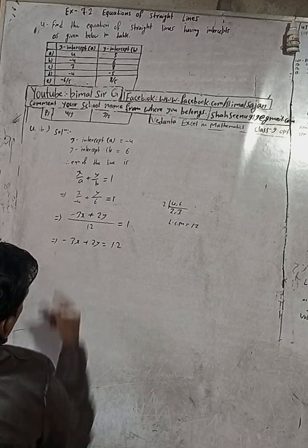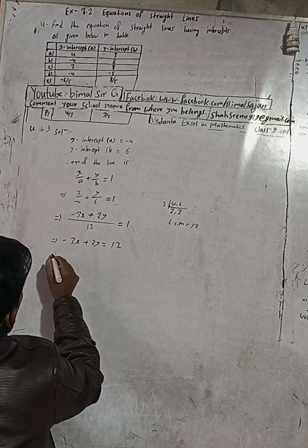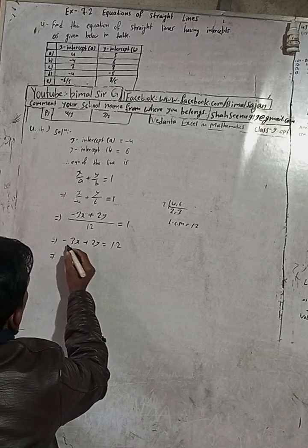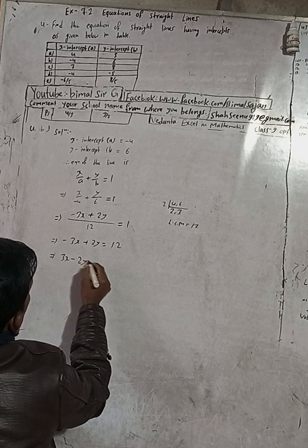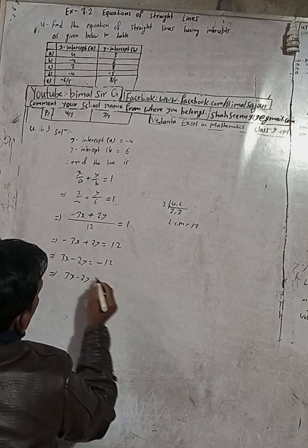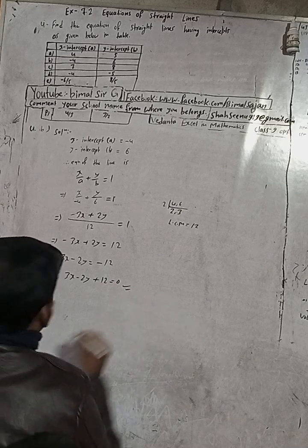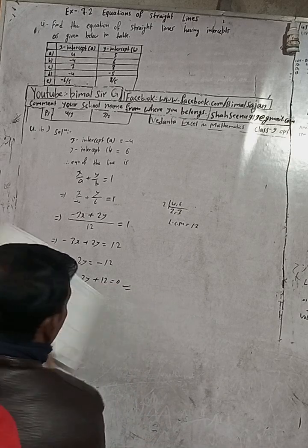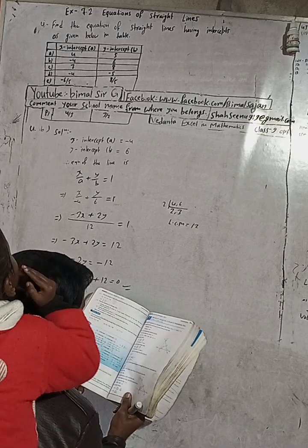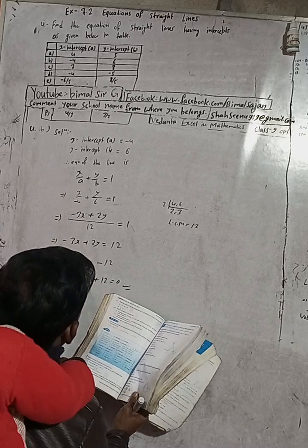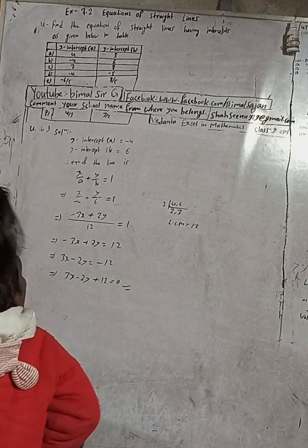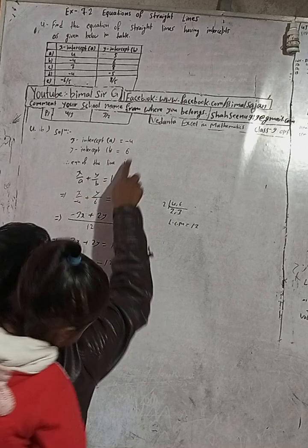Now change the sign throughout. Minus 3x becomes plus 3x, plus 2y becomes minus 2y, and 12 becomes minus 12. So the equation becomes 3x − 2y + 12 = 0. This is our required equation. The answer in the book is 4B: 3x − 2y + 12 = 0. Correct answer.